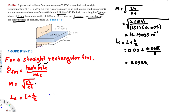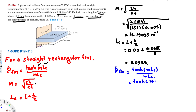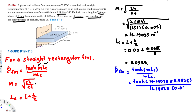To find fin efficiency, we use the equation: eta equals tanh(M times LC) divided by (M times LC). Plugging in M equals 16.19035 and LC equals 0.0525, we get tanh(16.19035 times 0.0525) divided by (16.19035 times 0.0525), which gives an efficiency of 0.813, or 81.3 percent.